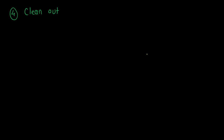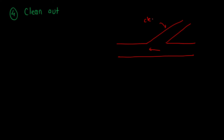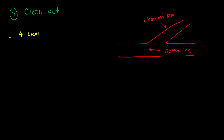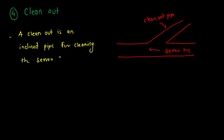The fourth appurtenance is called clean outs. This is an inclined pipe or inclined opening in the sewer line through which we can clean the sewer. A clean out is an inclined pipe used for cleaning the sewer lines.